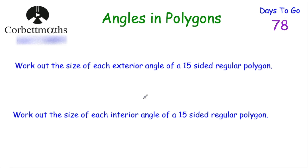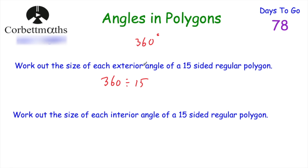Here are two questions — feel free to press pause and try them yourself. The first question: find the size of each exterior angle of a 15-sided regular polygon. Since it's regular, all exterior angles are equal, and they always add to 360 degrees. So 360 ÷ 15 = 24 degrees. Each exterior angle of a 15-sided regular polygon is 24 degrees.